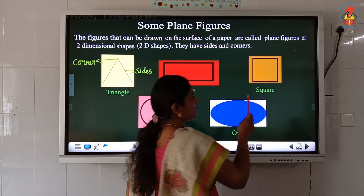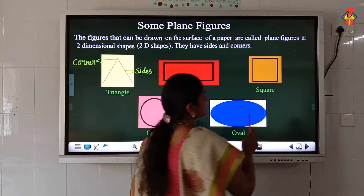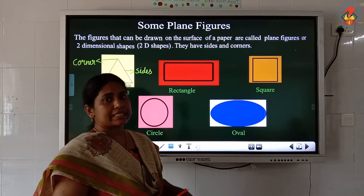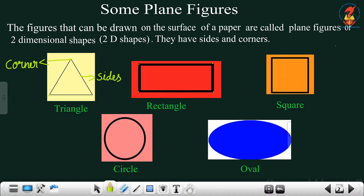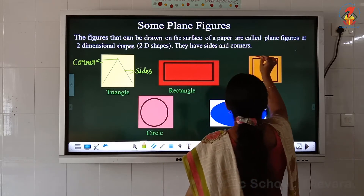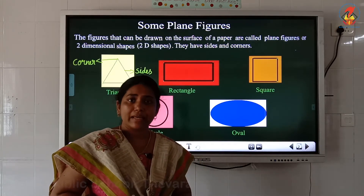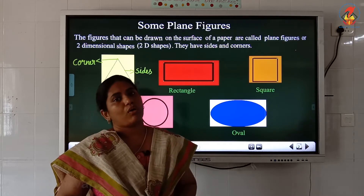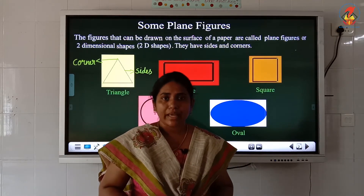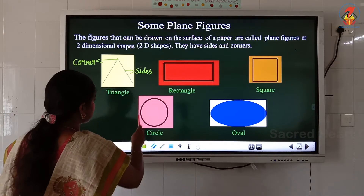The next shape is called a square — spelling: S-Q-U-A-R-E. Counting sides: one, two, three, four — four sides. Counting corners: one, two, three, four — four corners. For a square, all four sides are equal.